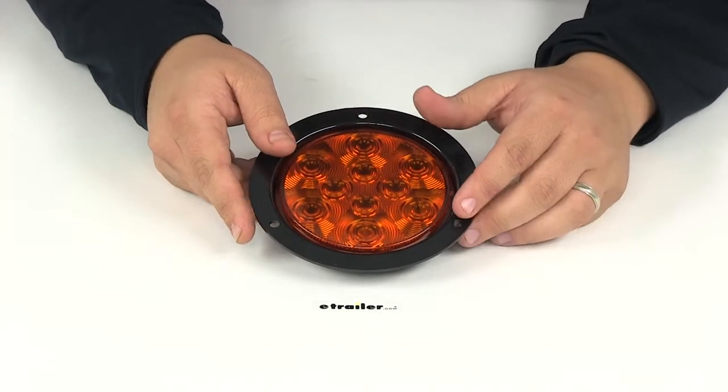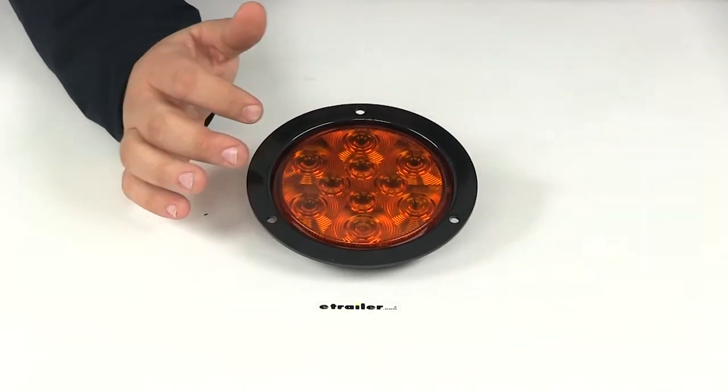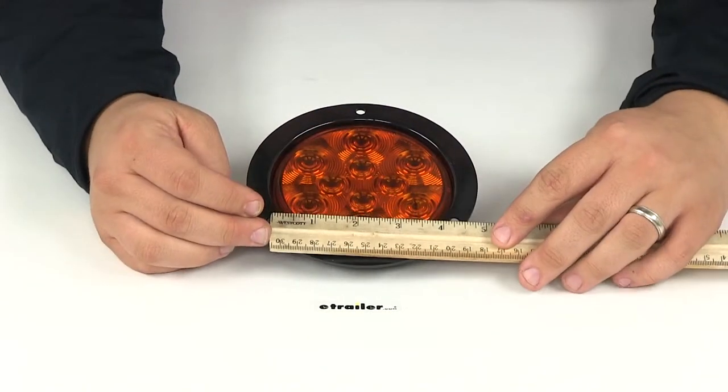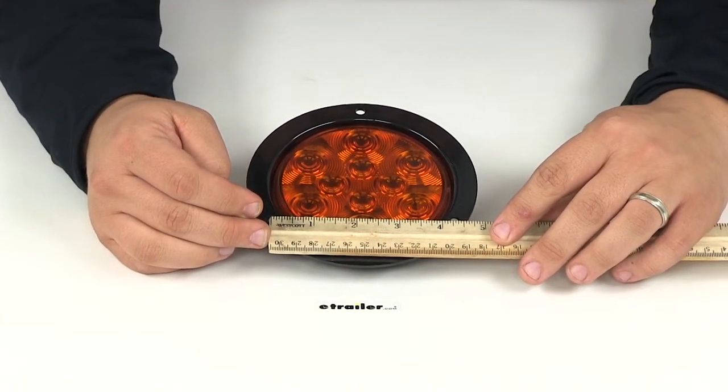It will flange mount through the three holes in the housing that goes around the light. Measuring the distance from the center of one hole to the center of the other measures four and one quarter of an inch.